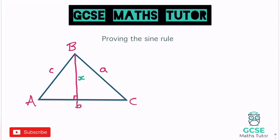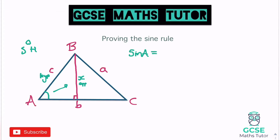I'm going to label this height as x and find an expression for x using the two right-angle triangles. Starting with the left triangle and angle A: x is the opposite and c is the hypotenuse, so we use sine — sine is O over H. So sine A equals x over c. Multiplying both sides by c gives us the expression c·sinA = x.